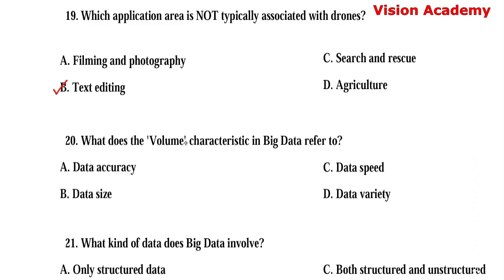Question number 20. What does the volume characteristic in big data refer to? Option A: Data accuracy. Option B: Data size. Option C: Data speed. Option D: Data variety. Here, option B, data size, is the right answer.